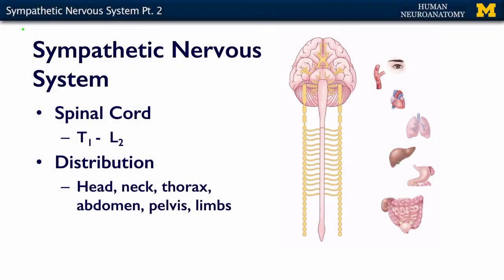The distribution of the sympathetic nervous system is described as thoracolumbar because the cell bodies of origin are in the intermediolateral cell column between T1 and L2, as pictured here. This is about T1 and this is about L2.